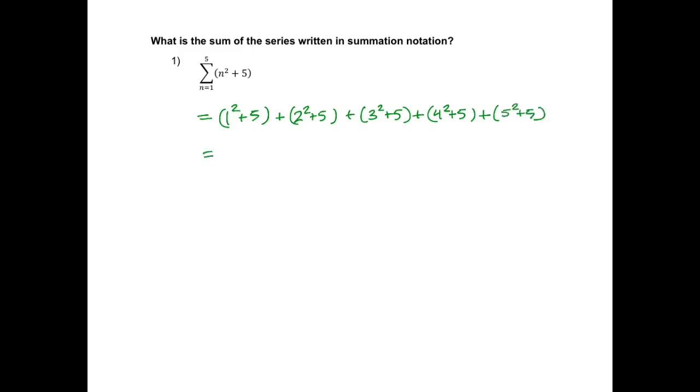So this is the same as 1 plus 5 plus 4 plus 5, plus 9 plus 5, plus 16 plus 5, plus 25 plus 5. So when I add everything, I'm going to have 1 plus 5 plus 4 plus 5 and so on. It's going to be 80.